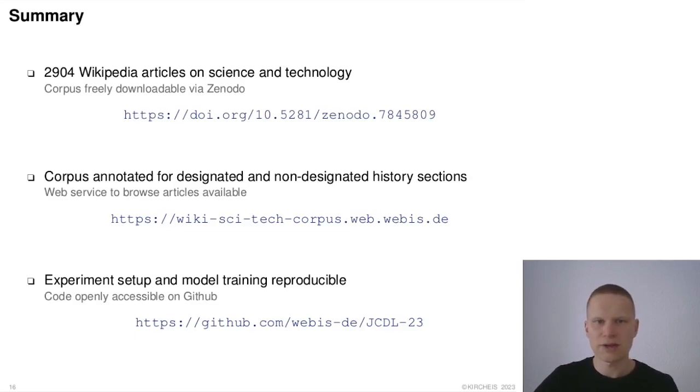The corpus of almost 3,000 Wikipedia articles on science and technology is available on Zenodo. The corpus is annotated for designated and non-designated history sections, and we also provide a web service to browse the articles online.